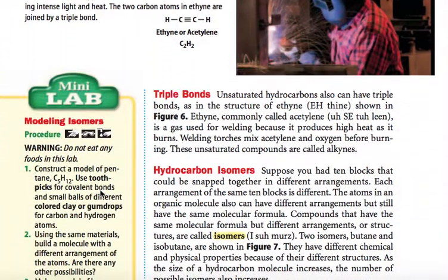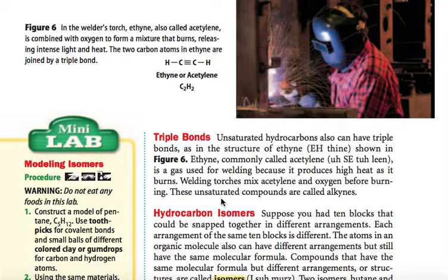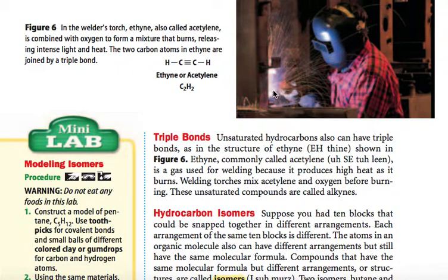Unsaturated hydrocarbons can also have triple bonds, as in the structure of ethyne, Y-N-E. Ethyne, commonly called acetylene, is a gas used for welding because it produces high heat as it burns. Welding torches mix acetylene and oxygen before burning. These unsaturated compounds with triple bonds are called alkynes. In shop class in high school, you can learn to use an acetylene torch to burn and melt metal, joining two pieces of metal together — that's called welding.